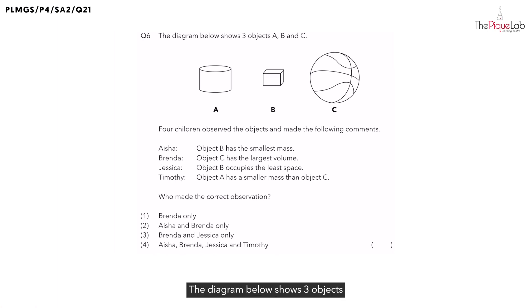Question 6. The diagram below shows 3 objects and 4 children made the following comments after observing the objects. This question is asking, who made the correct observation?